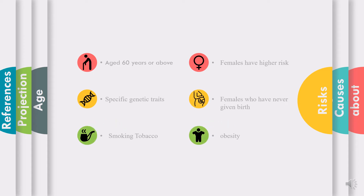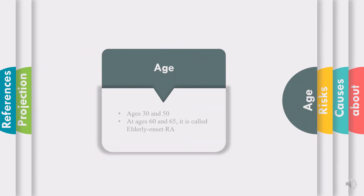Risk factors for rheumatoid arthritis include people with specific genetic traits, smoking tobacco, females who have higher risks than men, females who have never given birth, and obesity. Rheumatoid arthritis can start at any age but most likely shows up between ages 30 and 50. When it starts between ages 60 and 65, it is called elderly onset rheumatoid arthritis.